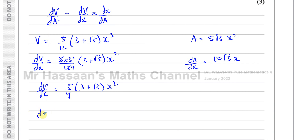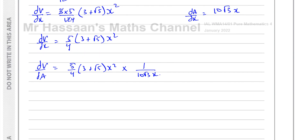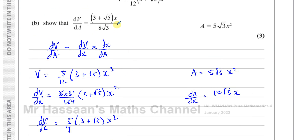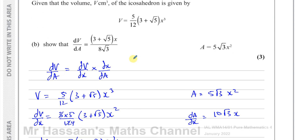Now dV/dA equals dV/dx times dx/dA, which is the reciprocal of dA/dx. So that's (5/4)(3 + root 5)x² multiplied by 1/(10 root 3 x). The 5 cancels with the 10 to give 2, and x cancels with x² to give x, leaving dV/dA equals (3 + root 5)x over (8 root 3). That's exactly what we had to show — part b done.